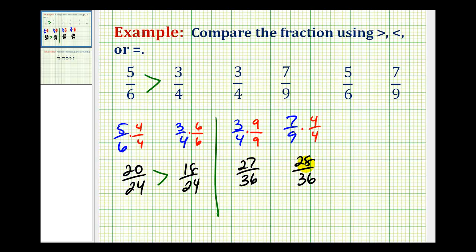And now we can see that 28/36ths is larger than 27/36ths, or we can say that 27/36ths is less than 28/36ths. Therefore, 3/4 is less than 7/9.